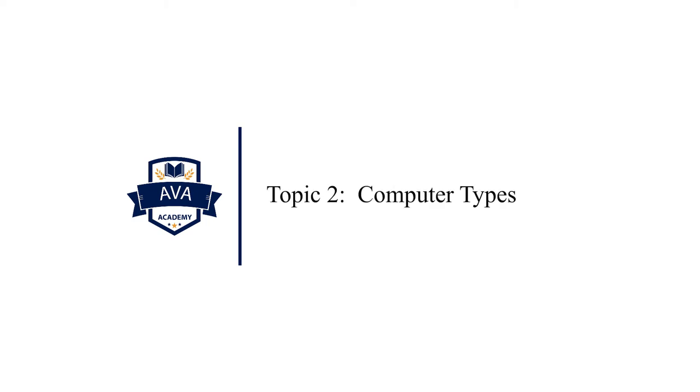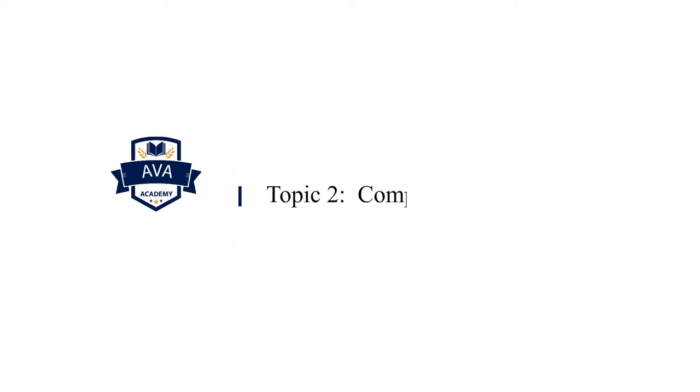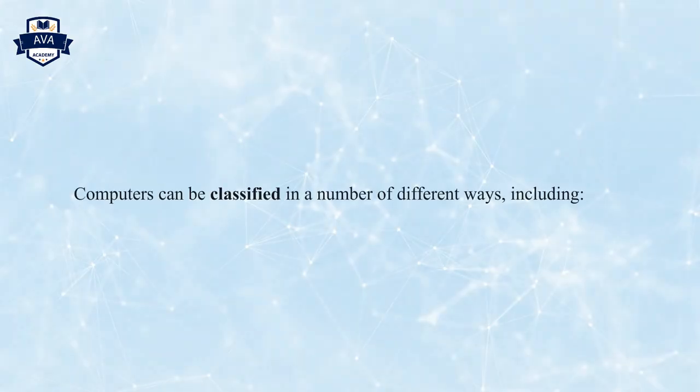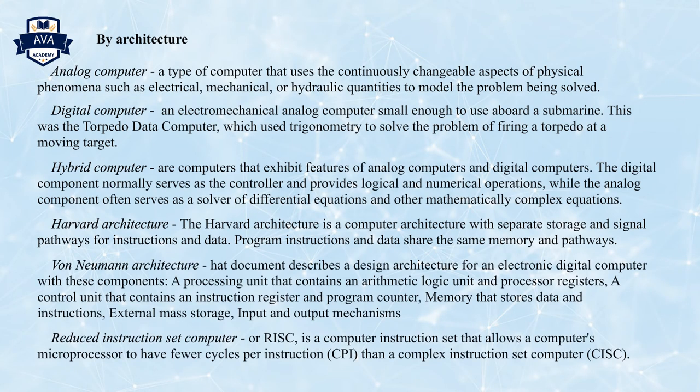Topic 2: Computer Types. Computers can be classified in a number of different ways, including by architecture, which are analog, digital, hybrid, Harvard, Von Neumann, and reduced instruction set computer.